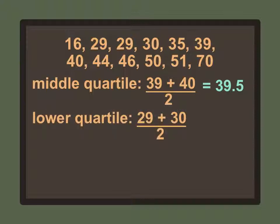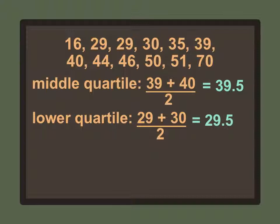To find the lower quartile, we find the median of the lower half, which is 16 through 39. The two middle numbers are 29 and 30. Since a median can't be two numbers, we take the average of 29 and 30 — add them together and divide by 2. So the lower quartile is 29.5.